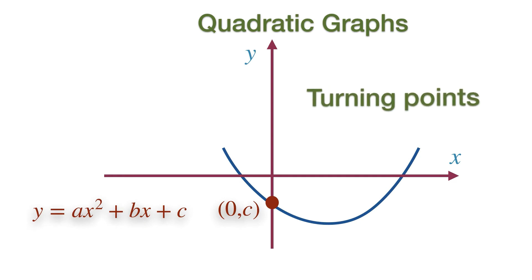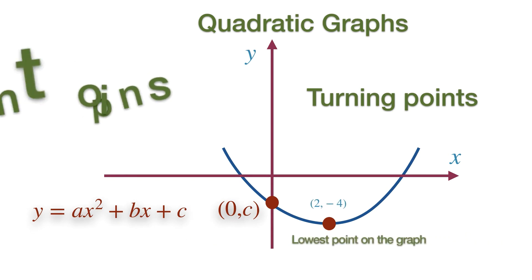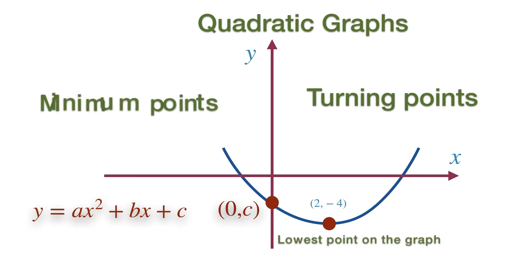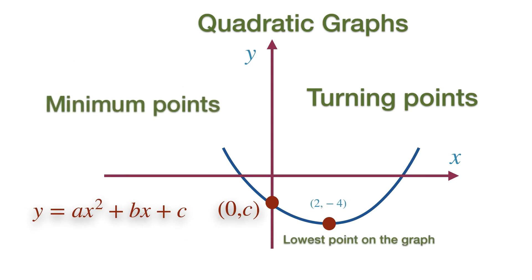Parabolic curves have minimum and maximum values, also known as turning points, as the graph takes the turn at these points. When the parabolic curve is a happy face, the graph has a minimum value. For example, if the coordinate is (2, -4), then the lowest point on the graph is minus 4. The lowest value is the Y coordinate, and this occurs when X is 2.